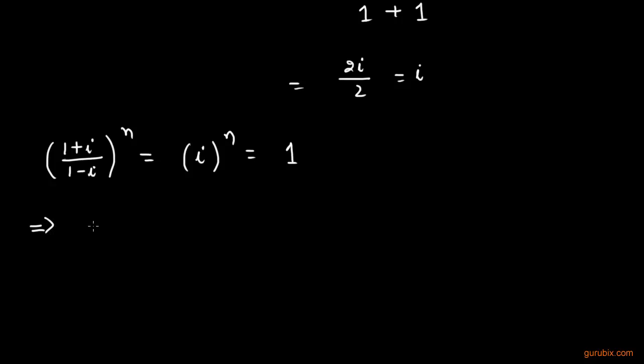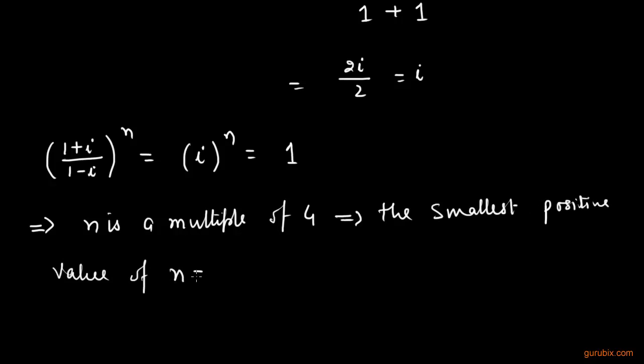This implies that n is a multiple of 4 and this implies that the smallest positive value of n is 4. So, this is the solution of the question. Thank you.